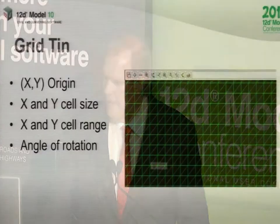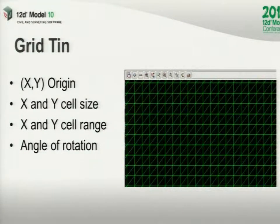A grid TIN is that same sort of object that's been triangulated. Because it's such regular data, it's not so hard to triangulate it, so it's very easy to do that process. It's exactly the same thing — it's an origin, cell size, and then we can use a grid TIN just like a normal triangulation.